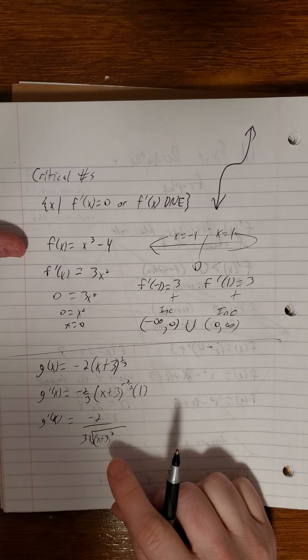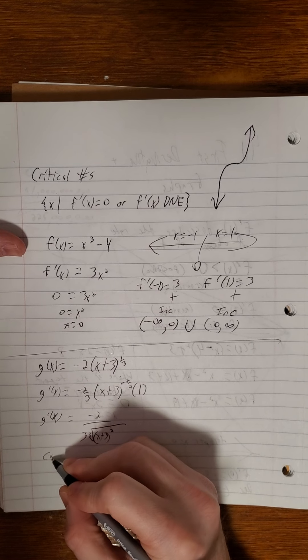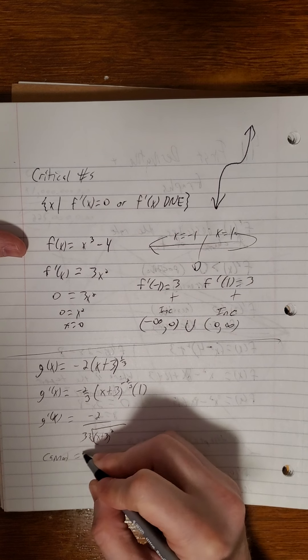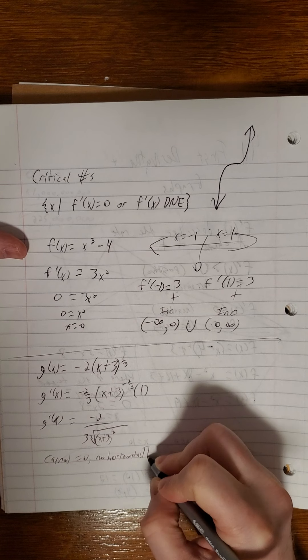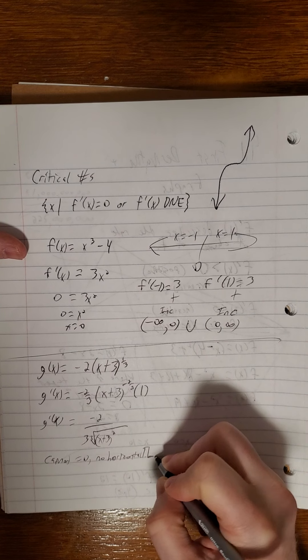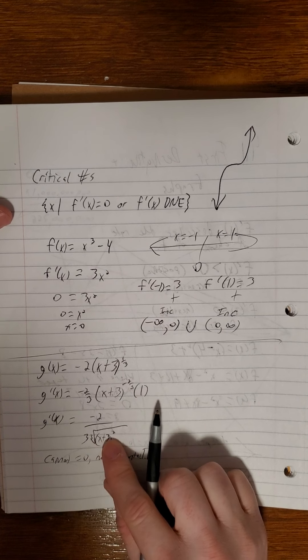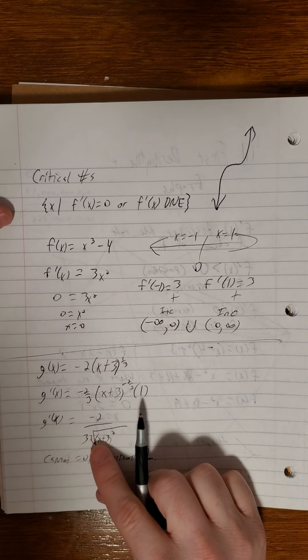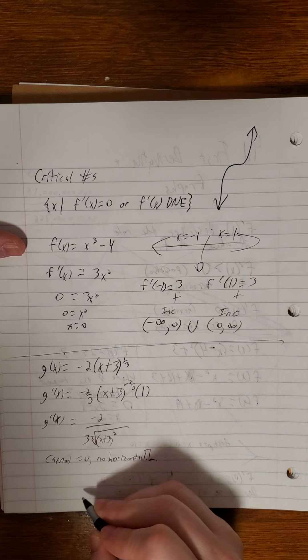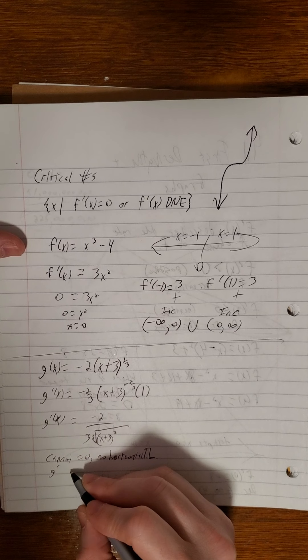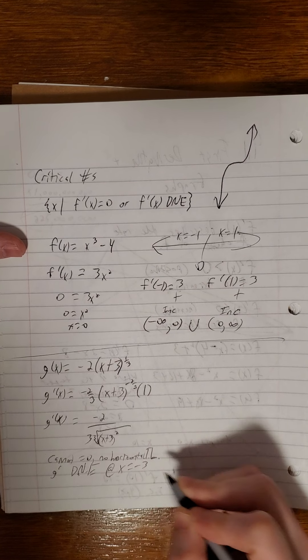Okay, so this cannot equal 0, so we don't have any horizontal tangent lines. But as you can see, if I pick out a negative 3 for my input, I get 0 squared, which is 0, cube root of 0 is 0, 3 times 0 is 0, 0 in the denominator.